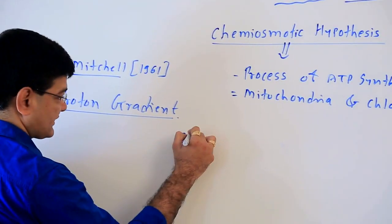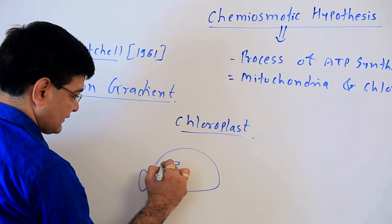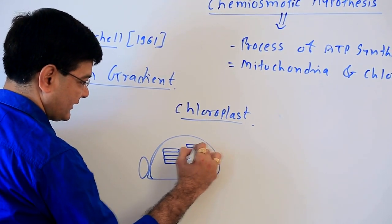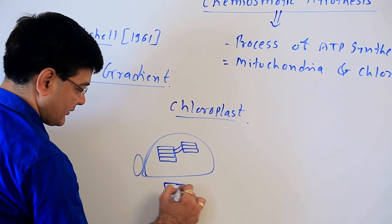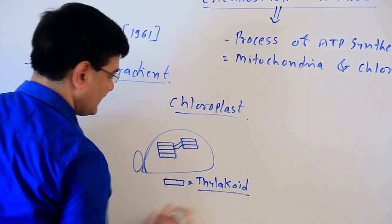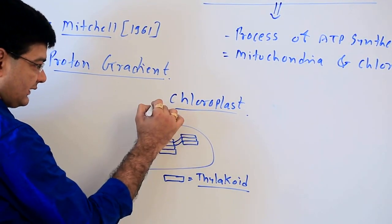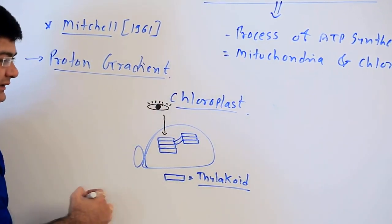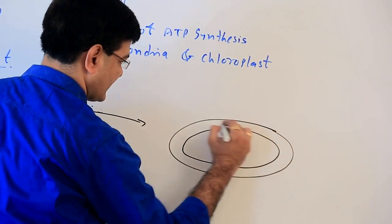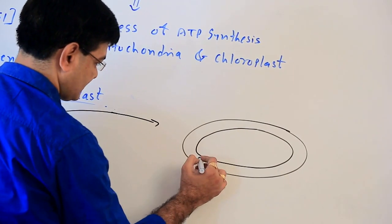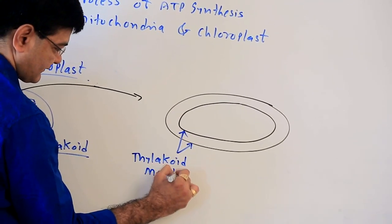In the chloroplast, the internal structure shows a pile of thylakoids called a granum. The thylakoid is a double-membranous pouch-like structure. If we observe the thylakoid from the upper view, it appears oval-shaped with an outer and an inner membrane.